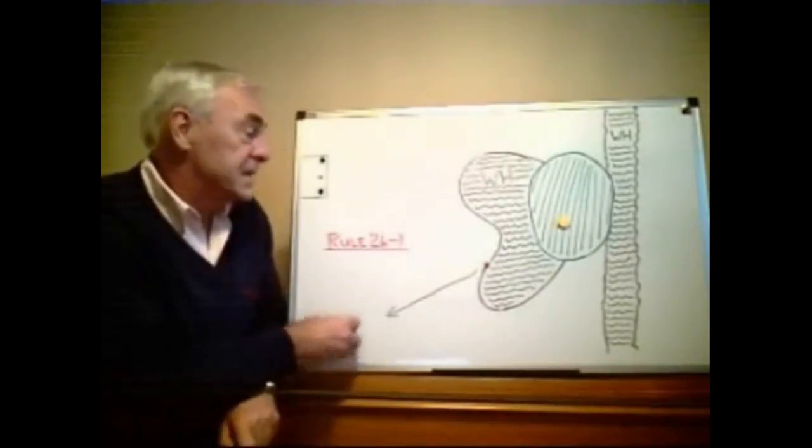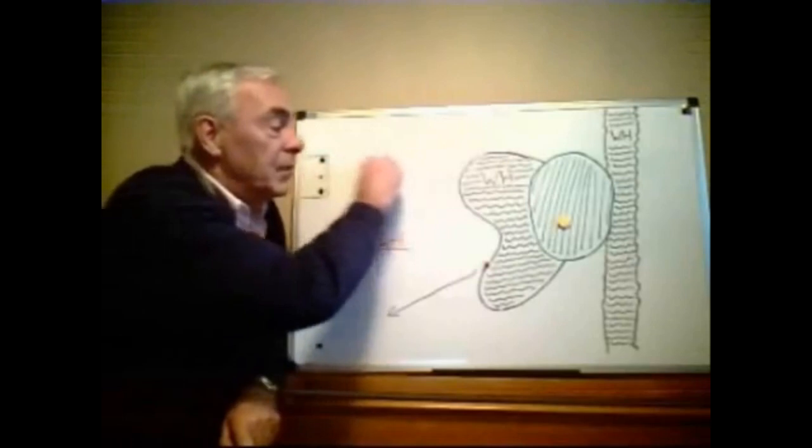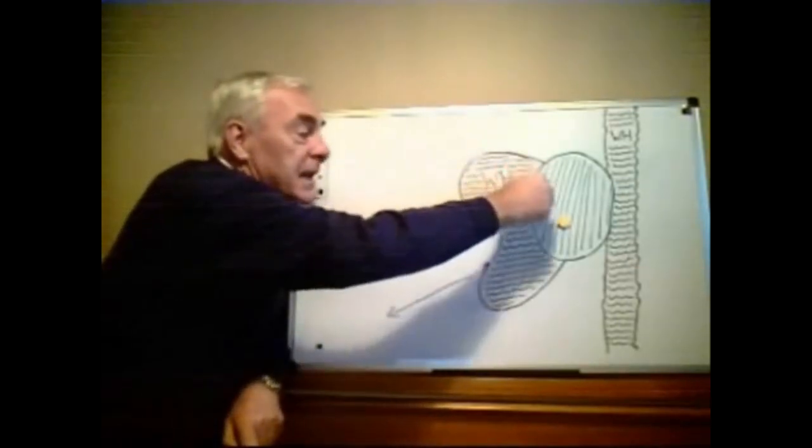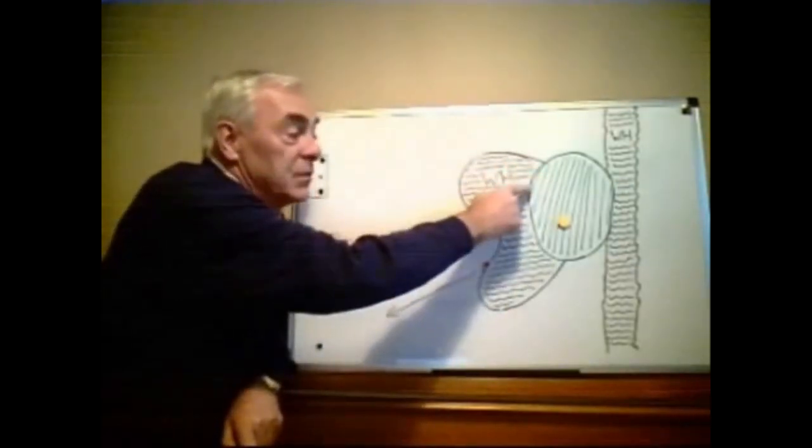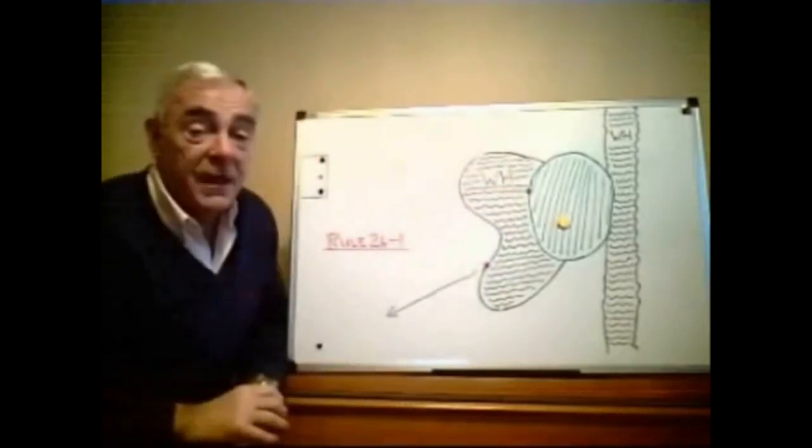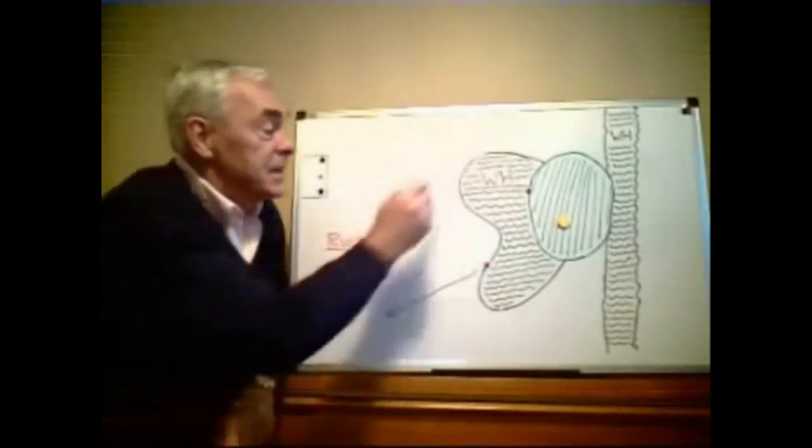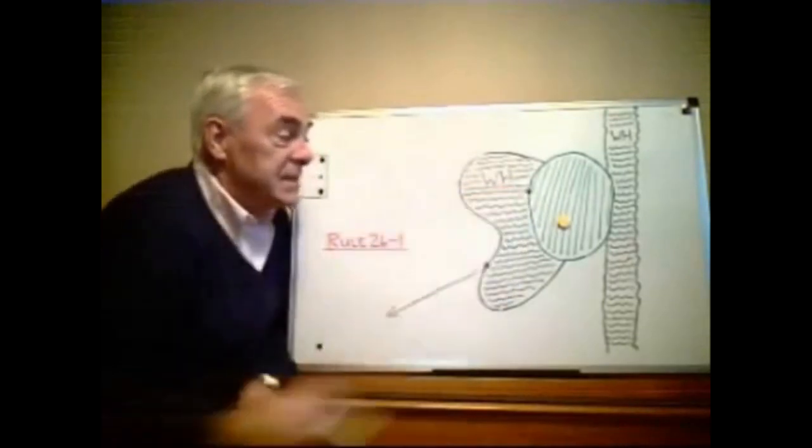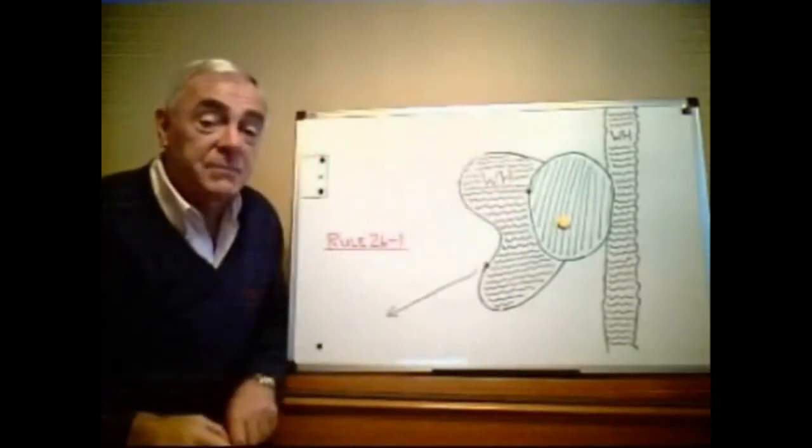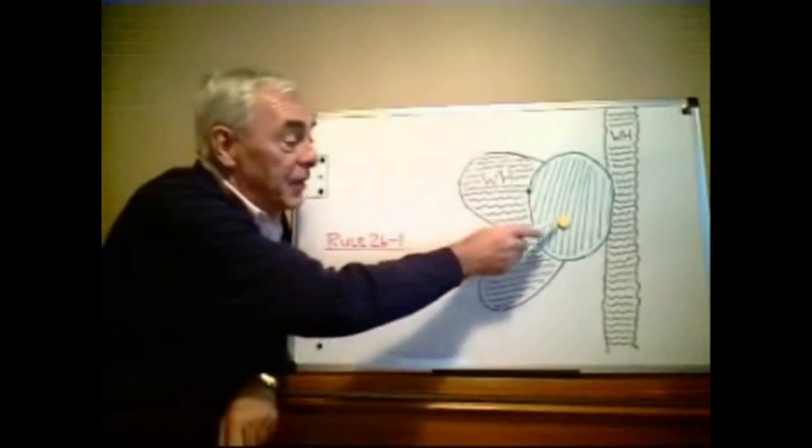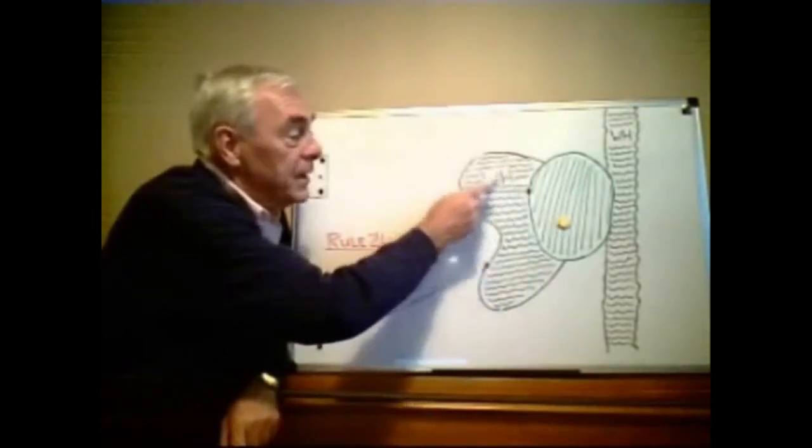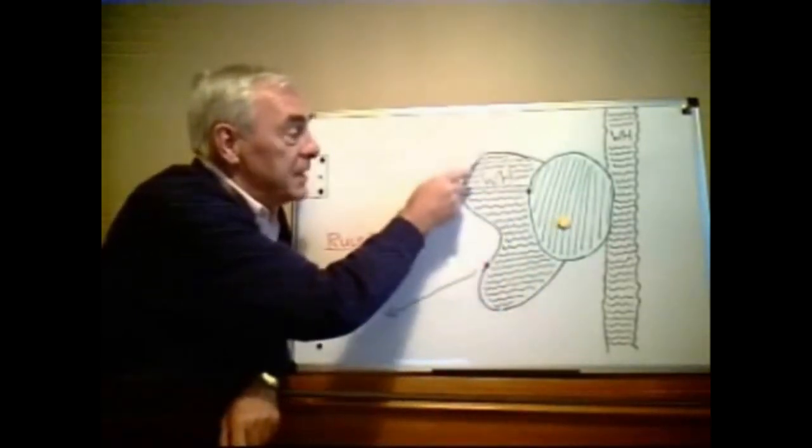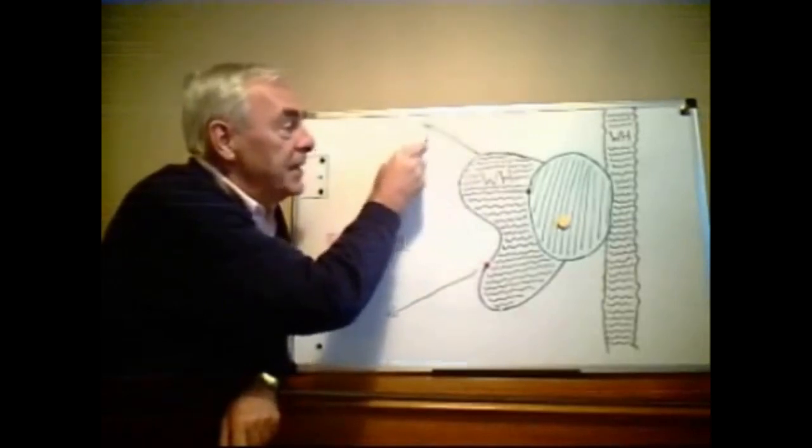The second scenario is when a player played their ball it bounced on the green here but spun back into the water last crossing the margin at that point there. So it crossed the margin twice. Here was the first time but this was the last time and therefore that's the reference point that you take for the line of drop. Once again it's through the flagstick through where the ball last crossed the margin and anywhere on that line there.